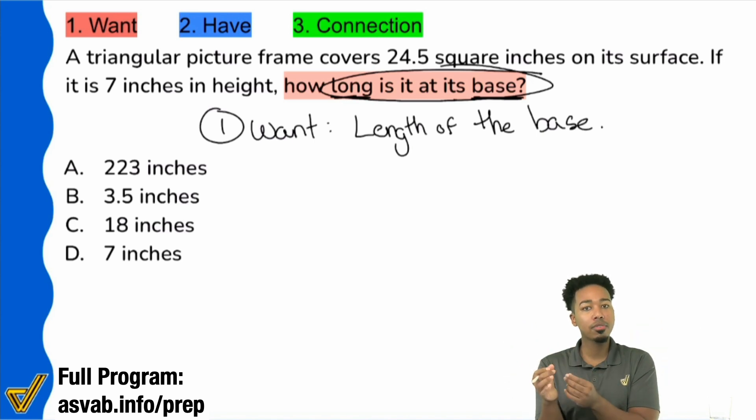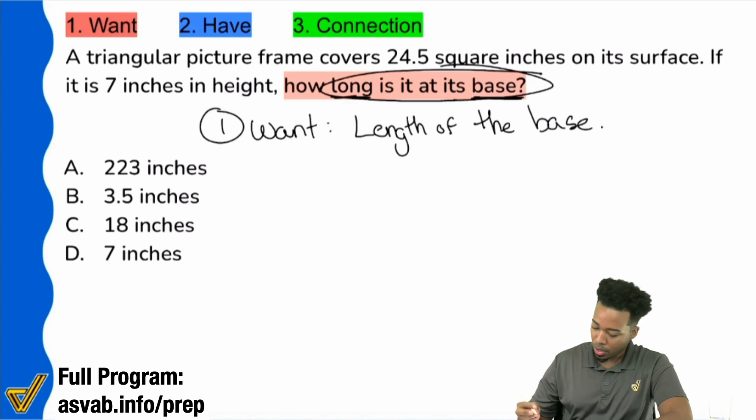So whenever, any time, in any word problem, you get a hint that you're dealing with a shape, you always want to identify what shape it is. If you fail to identify what shape you're dealing with, then what's going to happen is you're going to use the wrong formula, and then you're going to be confused and stressed out. So always ask yourself, whenever you're dealing with anything about a length, a width, a perimeter, an area, a volume, always ask yourself, what shape? Because when you know the shape, you know the formula.